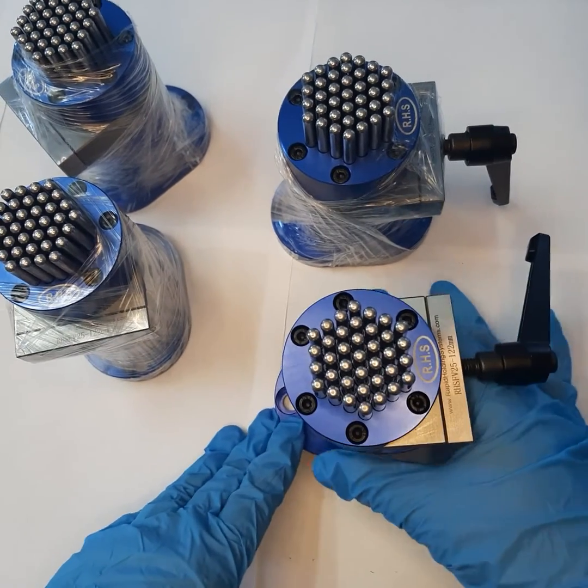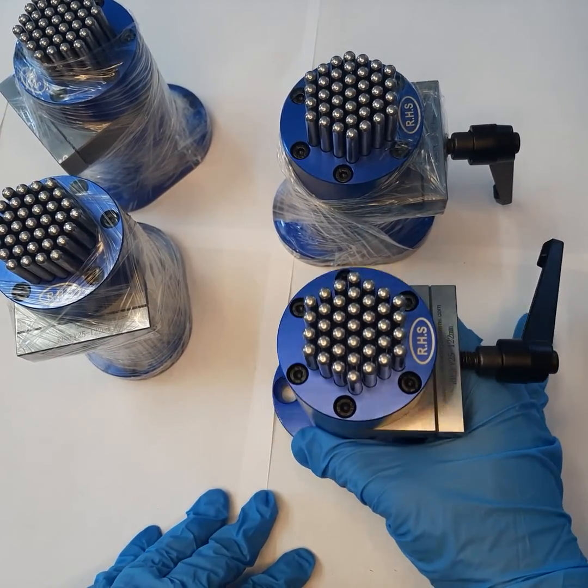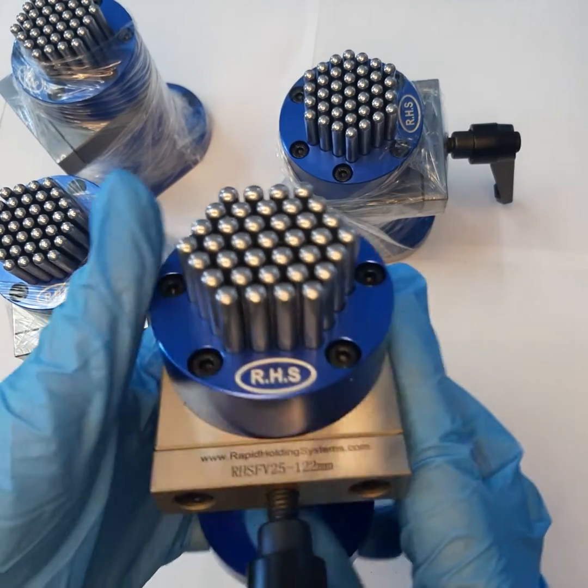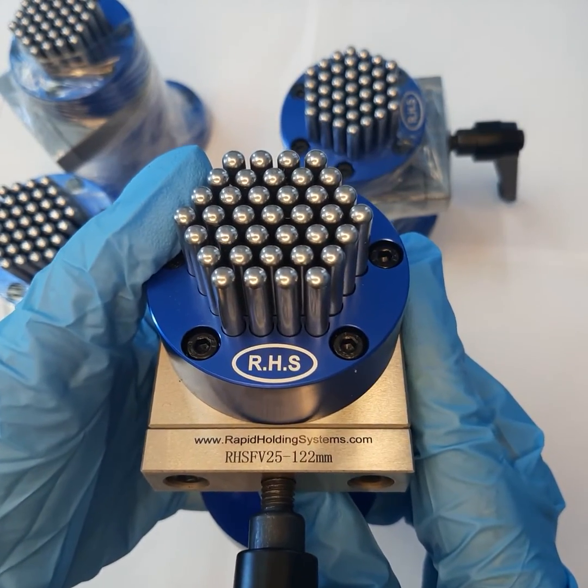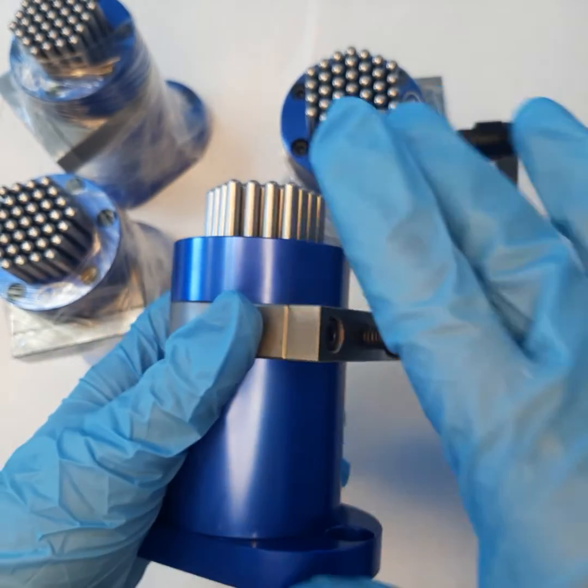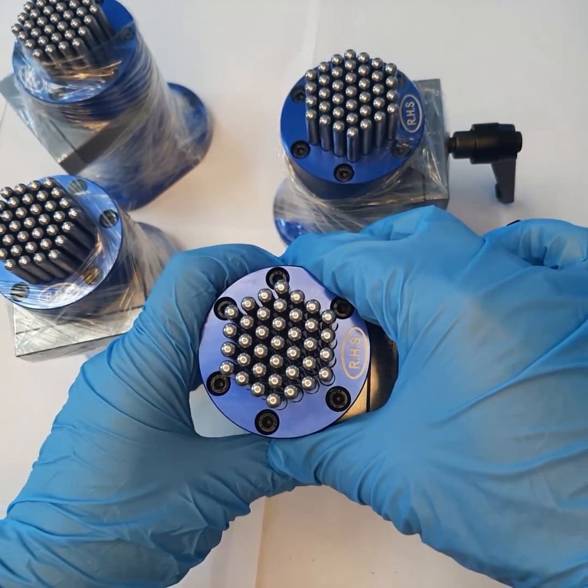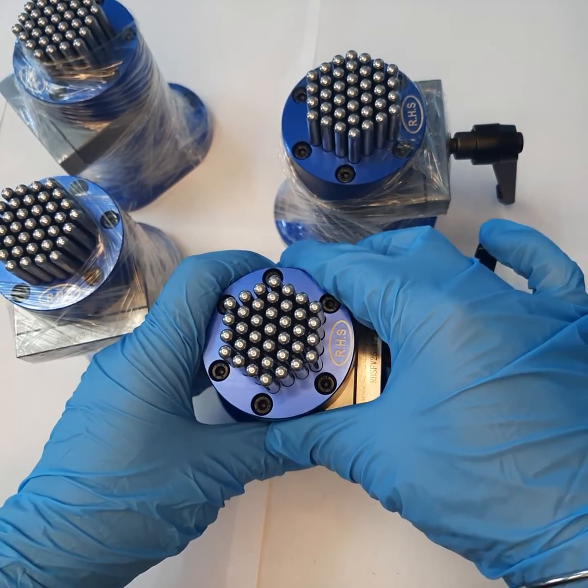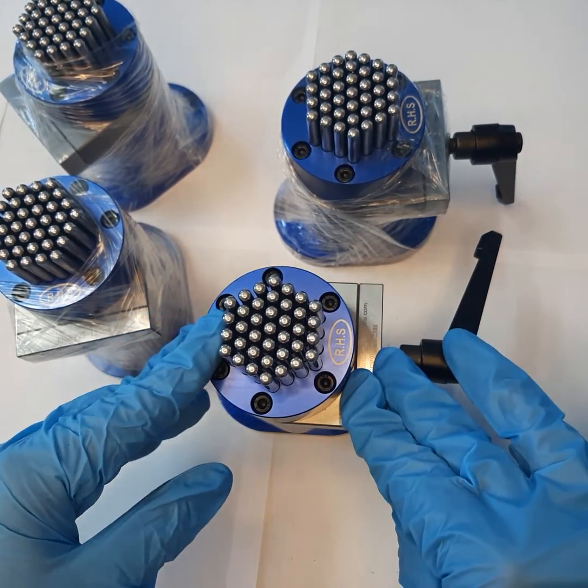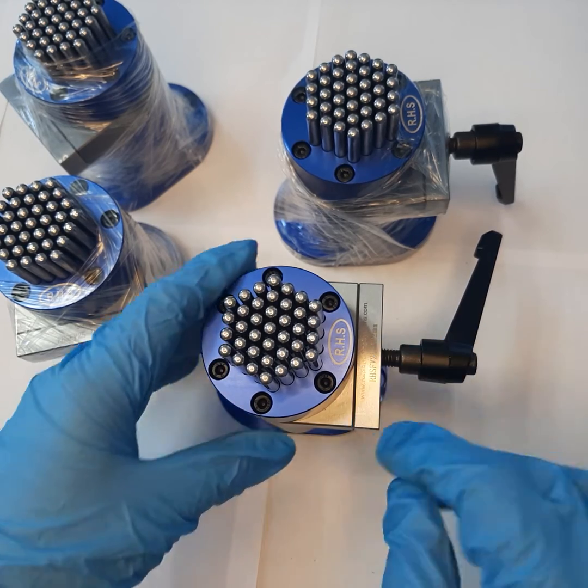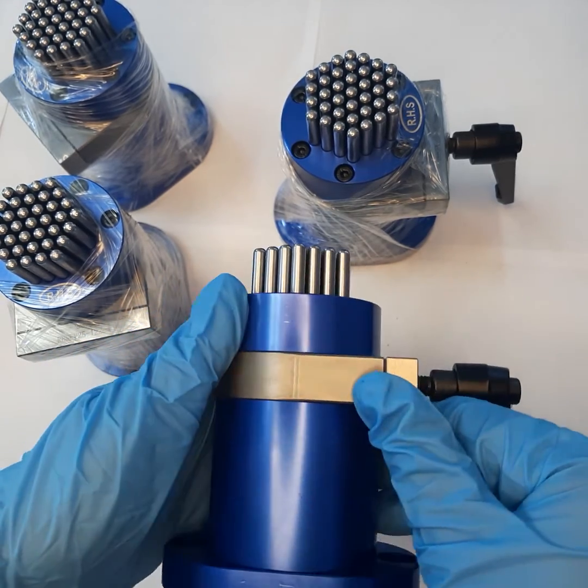Hello, this is Rapid Holding Systems showing you another beautiful innovation, part number RHS-FV25 of height 122mm. This one is a D60 flexible fixture, and the material of the fixture is stainless steel plus aluminum alloy.